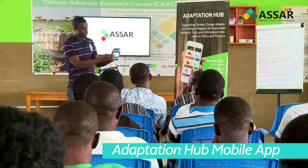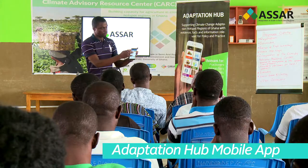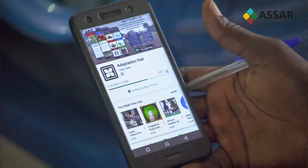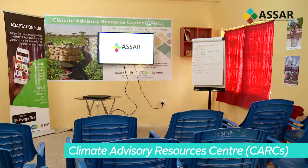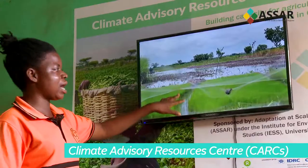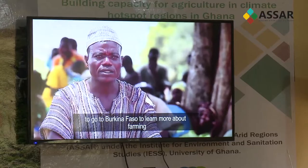We try to be innovative — nowadays we are moving into technology. Everybody has a mobile phone and many different types of apps, so how do we get information to them? There is a mobile app called the Adaptation Hub. One of the things we are also quite proud of is the establishment of the climate advisory centres, based within key institutions within the two districts. A lot of information has been provided in these advisory centres.